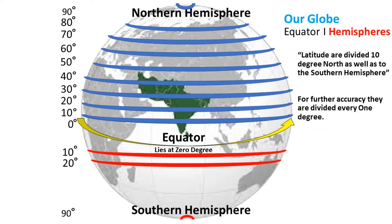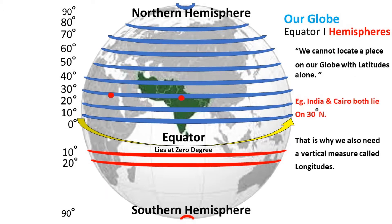Each degree has its own latitude and there are 90 latitudes in both hemispheres. Using this knowledge, let's try to read maps — but there's a problem: we cannot locate a place on our globe with latitudes alone. For example, India and Cairo both lie on the same latitude of 30 degrees north.